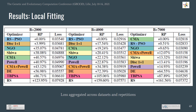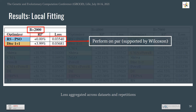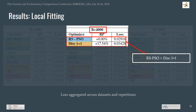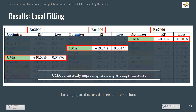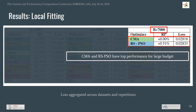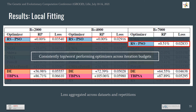For local fitting: at the lowest budget, Real Space PSO and Discrete 1+1 are the top optimizers performing on par. For the budget of 4000, the same top optimizers remain but with an increased performance gap. As budget increases, NGO, the chain of CMA and Powell, SHIWA, Discrete 1+1, and Powell perform on par. CMA consistently improves its ranked position as budget increases, and at the largest budget CMA and Real Space PSO exhibit top performance. Regardless of budget, Real Space PSO performs top, while differential evolution and TBPSA are the worst performing optimizers.